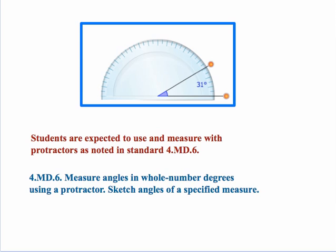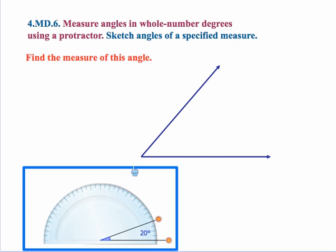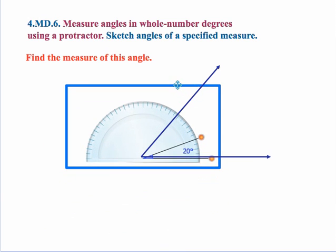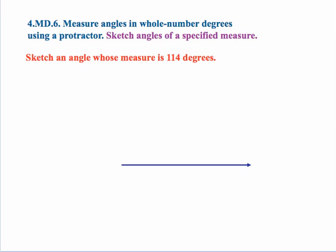Students are expected to use protractors and measure with them as noted in standard 4MD6 which states measure angles in whole number degrees using a protractor. Sketch angles of a specified measure. So let's say the task was to find the measure of this angle. So students will need to take their protractor line up the vertex and then just rotate and measure so this angle looks like it's about 50 degrees.